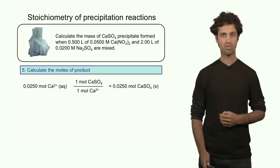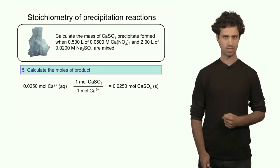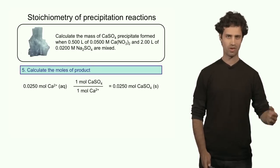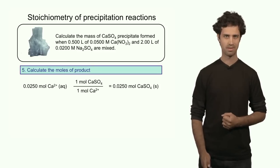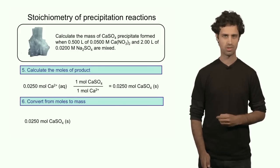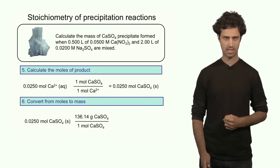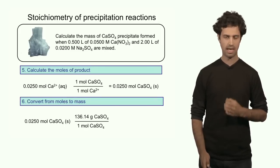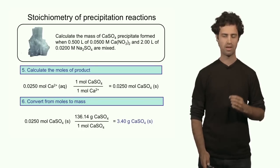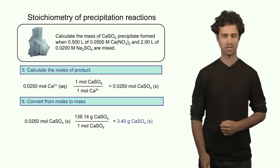Once I know the number of moles of the precipitate, I perform one more conversion — from moles to grams. Taking 0.025 moles times the molar mass of calcium sulfate gives 3.4 grams of the precipitate, which concludes our calculation.